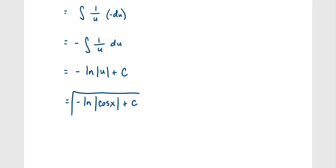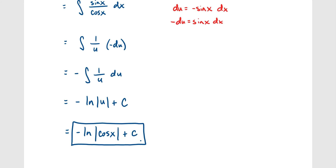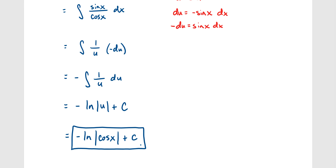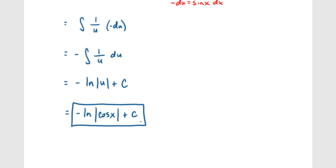So the integral of tangent(x) is negative ln|cosine(x)| plus c — which is not obvious at all. You need to know how to apply u-substitution to arrive at it.